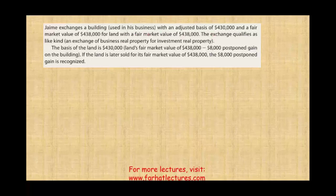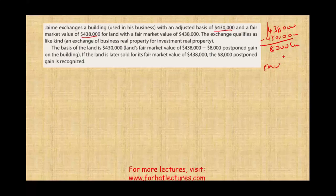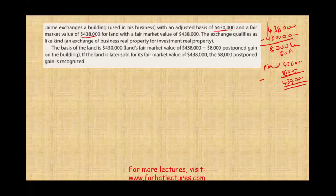Example: Jamie exchanged a building used in business with an adjusted basis of $430,000 and a fair market value of $438,000 for land with a fair market value of $438,000. The gain is $8,000. The exchange qualifies as like-kind. The basis in the land: fair market value received ($438,000) minus the deferred gain ($8,000) equals $430,000.